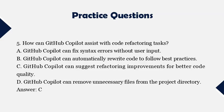Question 5: How can GitHub Copilot assist with code refactoring tasks? A. GitHub Copilot can fix syntax errors without user input. B. GitHub Copilot can automatically rewrite code to follow best practices. C. GitHub Copilot can suggest refactoring improvements for better code quality. D. GitHub Copilot can remove unnecessary files from the project directory. Answer: C.